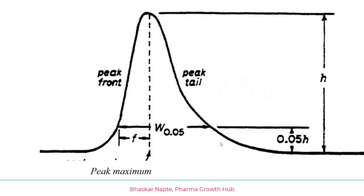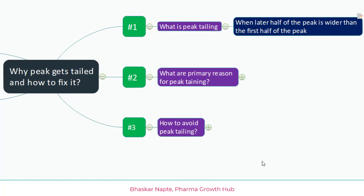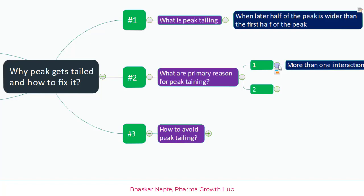Let me show you with a simple example. Here is the peak tailing example — in this case the latter half of the peak has a bigger width compared to the first half. So how do we understand peak tailing and what are the primary reasons for getting a peak tail?